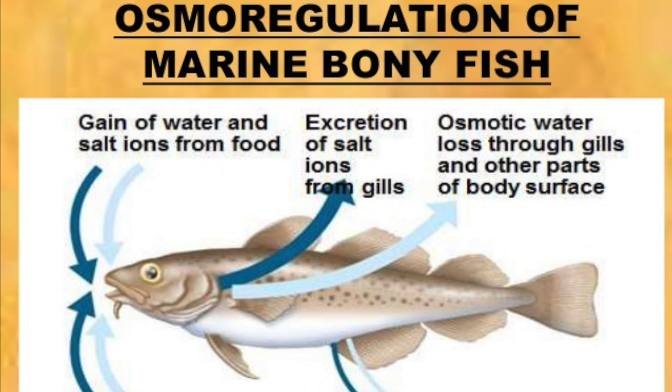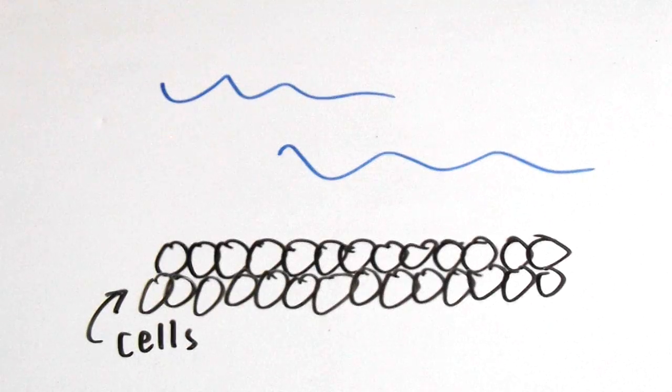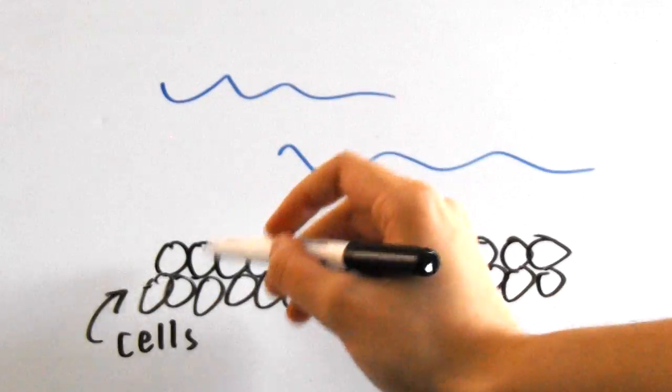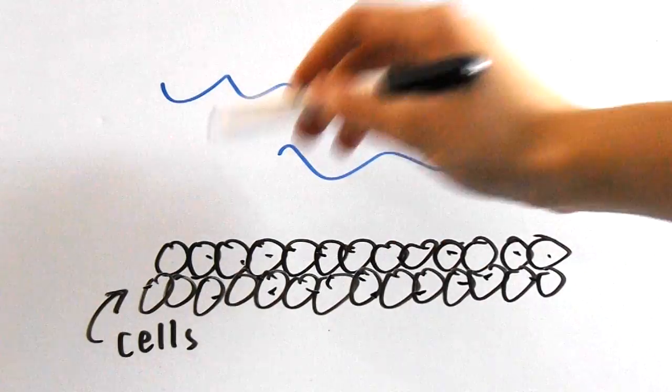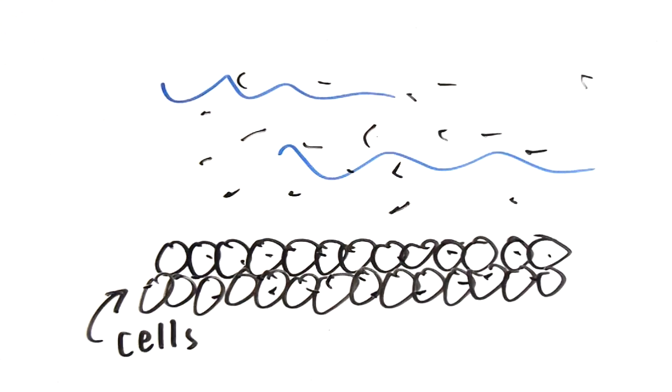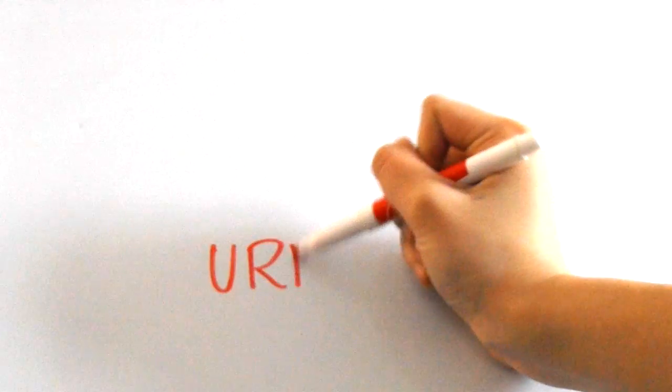In contrast, marine bony fish are surrounded by salt water, which has a very high solute concentration. That means the bony fish's cells are hypotonic to the surrounding water, and marine bony fish must excrete small amounts of concentrated urine in order to keep getting rid of the salt coming in. Also, marine bony fishes excrete urea.